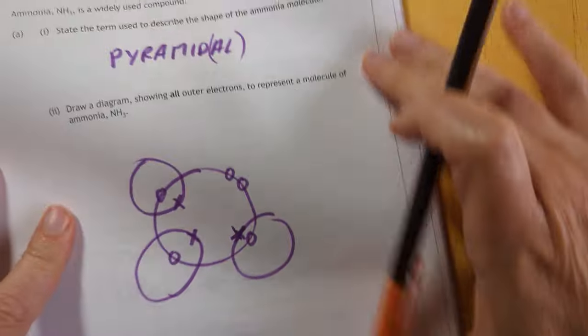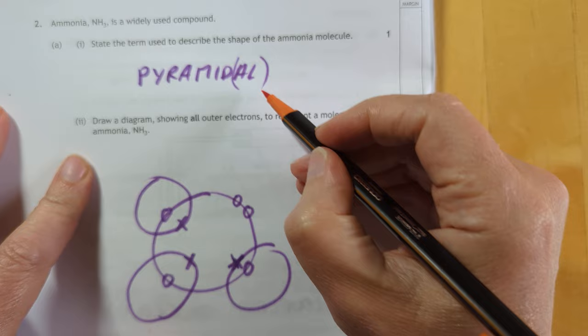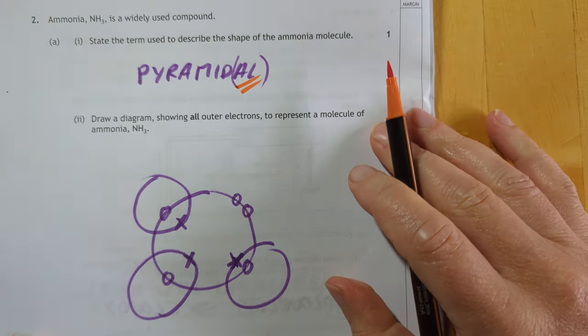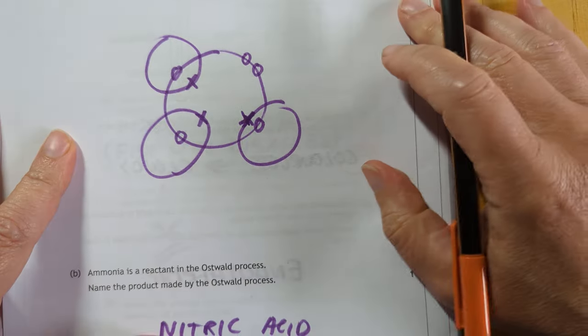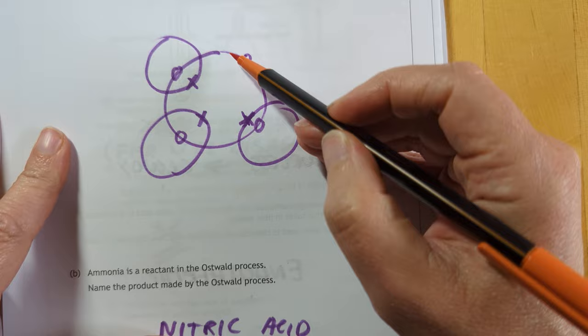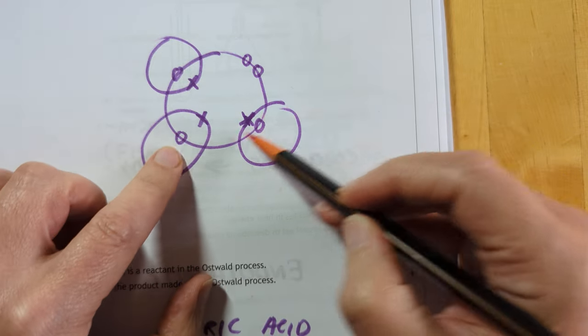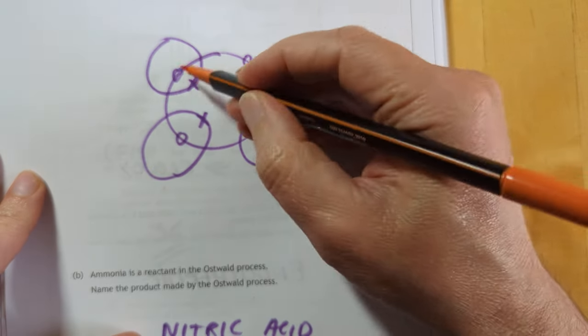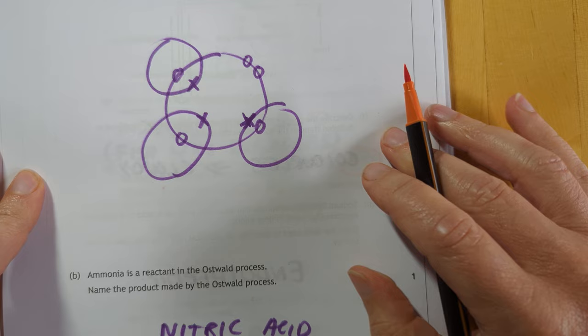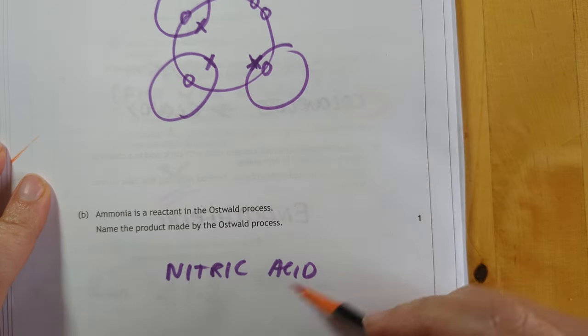Endothermic is a reaction that takes in heat. The shape of ammonia is pyramidal. Don't worry about the fancy -al at the end. Pyramid will get you the mark. Here's an ammonia molecule. Show all the dots as dots, show them all as crosses, it's all fine. Don't worry about the fact that I've changed them around. Anything along these lines will get you the mark there. And nitric acid is produced by the Oswald process.